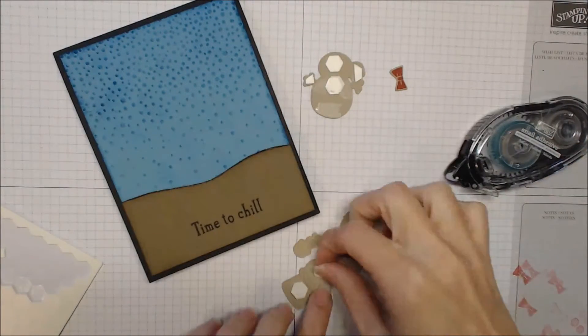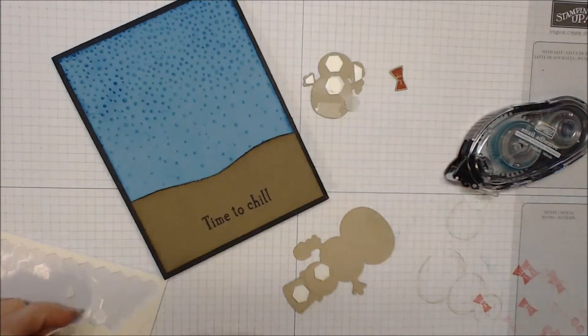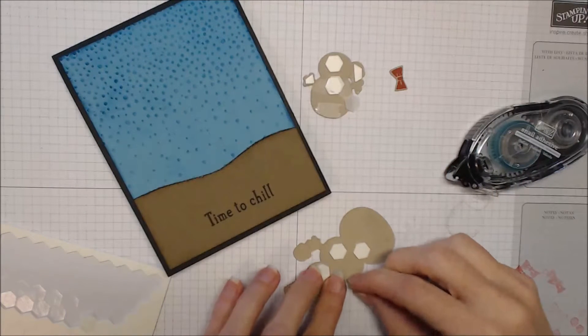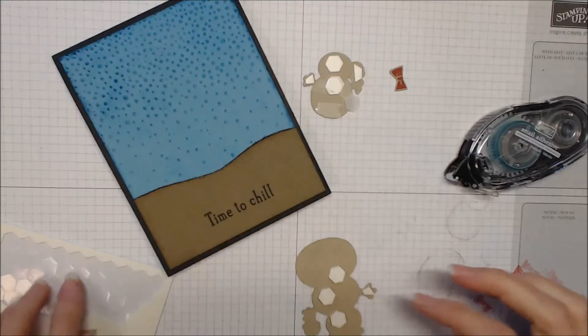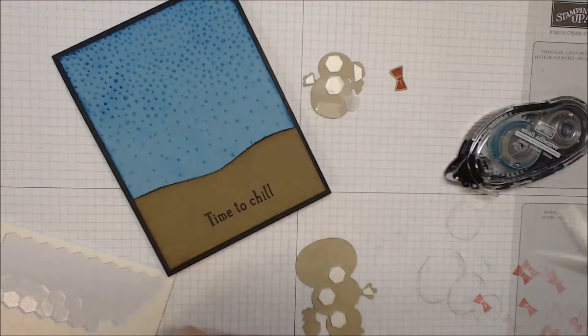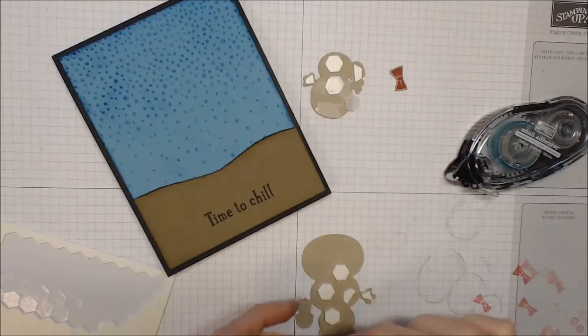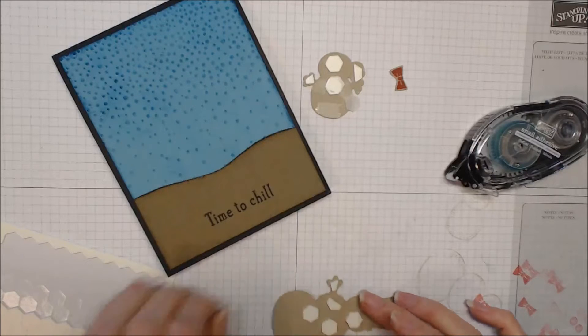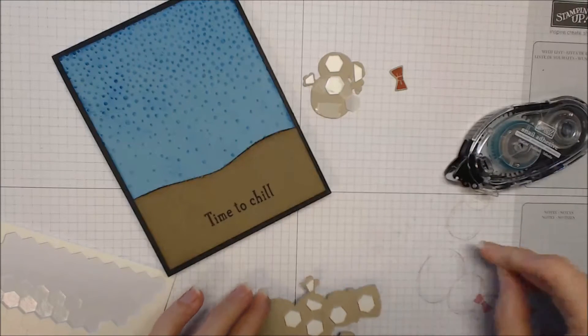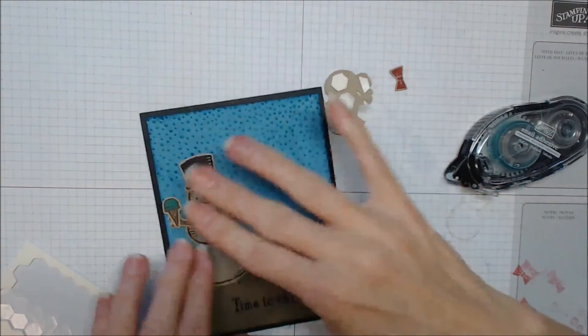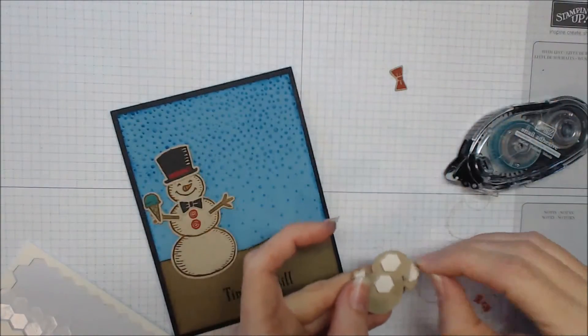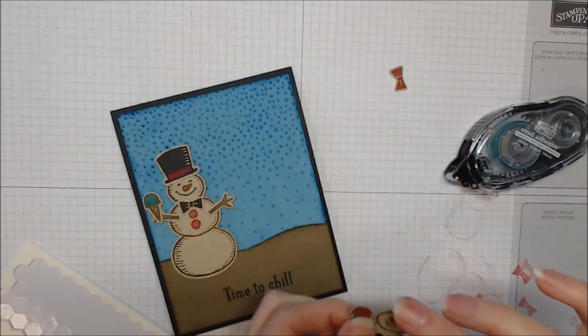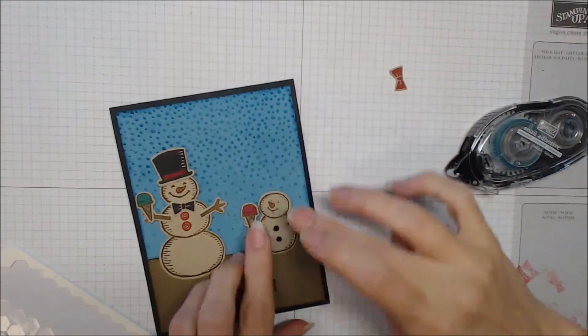I'm going to put some snail at the bottom of him and some dimensionals. Don't be surprised if you think I'm using too much. That's okay. You can use the amount that you think you need. I've taken some small pieces of dimensional for his little hand and his ice cream cone. And then I'll peel the backing off of all of those pieces and attach him on the left side of my card. And you'll be able to see how well he kind of stands out against that Marina Mist sky and the soft suede muddy ground in that little rain storm.